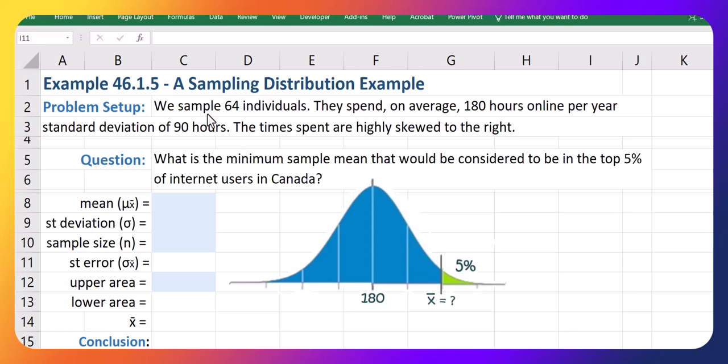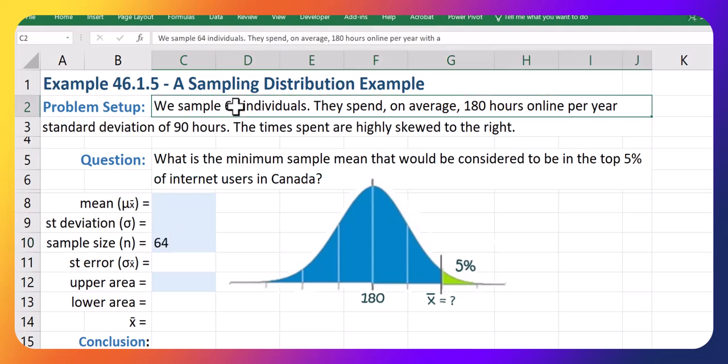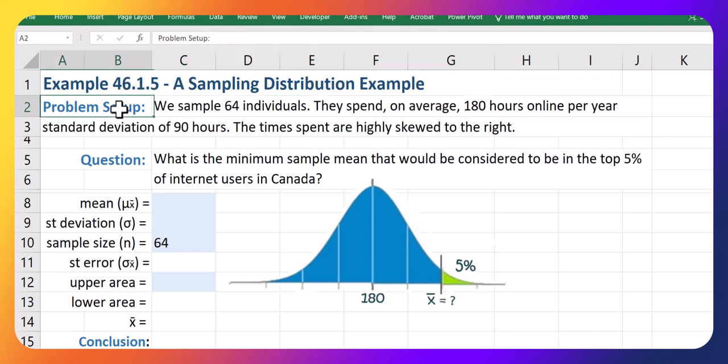Okay, so what we do know from before is that we sample 64 individuals, so that gives us our sample size of 64. This is the same as the previous example in my previous video. Also, we know that we spend an average of 180 hours in that sample. So that's our sample average and we're going to say that that's equivalent to the mean of our sampling distribution as well. This is because our sample size of 64 should be large enough for the central limit theorem to hold true.